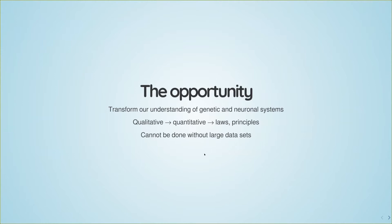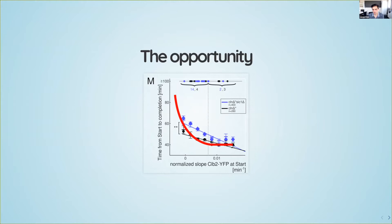We've realized that machine learning could transform our understanding of genetic and neural systems, because in many parts of biology the understanding is still very qualitative. People knock out or overexpress a gene, and to make that quantitative and extract more general laws or principles, you have to deal with large datasets. With more data we would have found it's not a linear relationship but a more complex function, pointing to completely different phenomena occurring inside these cells.